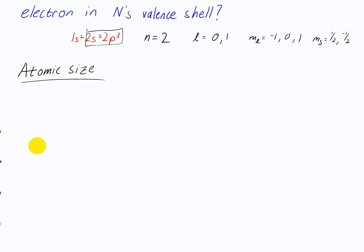What do you think is bigger — neon or xenon — size-wise? Let's first define this because 'size' is kind of a bad word. Size can mean mass, or it can mean volume — the amount of space it takes up. A better way to talk about this is atomic radius.